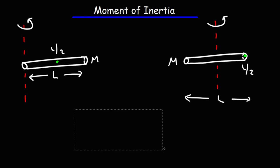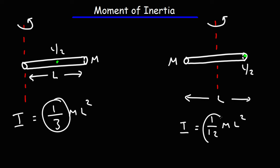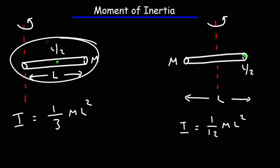Therefore, the moment of inertia of the slender rod on the left is going to be greater than that on the right, because we have more mass that's further away from the axis of rotation. And you can see that in the formula. The inertia for a slender rod when the axis of rotation passes through one end is 1/3 mL squared. On the right, when the axis of rotation passes through the center, the inertia is 1/12 mL squared. 1/3 is much larger than 1/12.